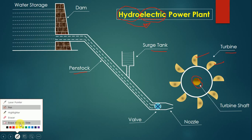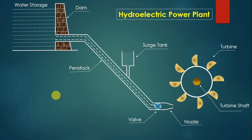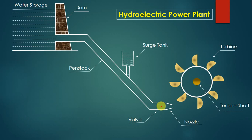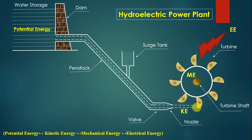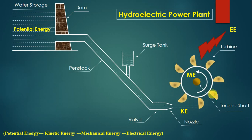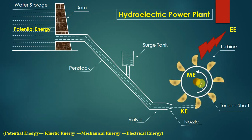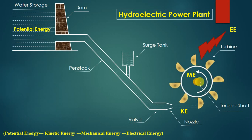Now let's understand the working. Assume the power plant is not currently working. To start generating electricity, we open the wall, which starts the flow of water. The water flows through the penstock, and a jet of water comes out and strikes the bucket of the turbine. This gives a force on the bucket, causing the blades to start rotating. The blades are connected to the rotor, so the rotor starts rotating, and as the rotor rotates, the shaft also starts rotating.